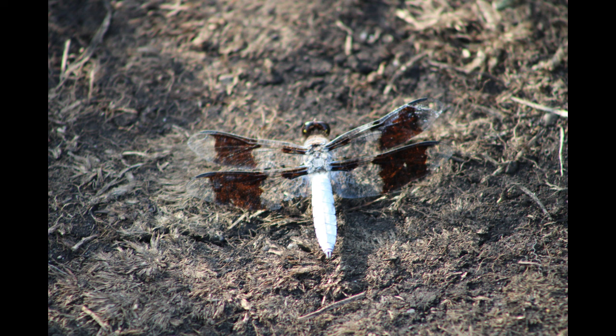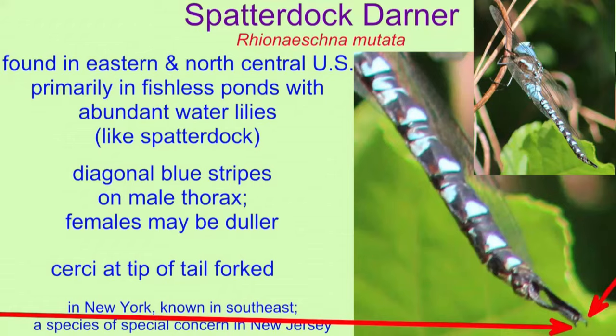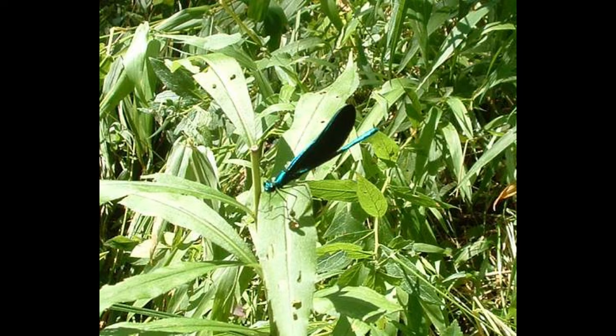The same is true in insect order Odonata, the dragonflies and damselflies, where the larvae of different species of dragonfly vary from each other, and the larvae of different species of damselfly vary from each other.